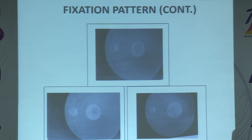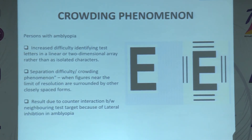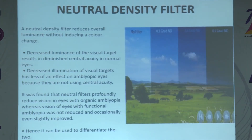We can check fixation pattern with the help of a visoscope or even with a direct ophthalmoscope. Crowding phenomena refers to the fact that amblyopic patients have better vision when tested with a single optotype compared to when checked with two or three-dimensional linear line charts. This occurs because of contour interaction between neighboring test targets due to lateral inhibition. In amblyopia, vision improves with single letter charts, while in other conditions it does not.